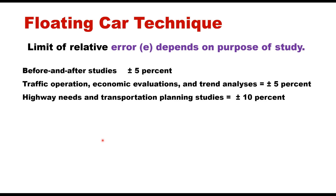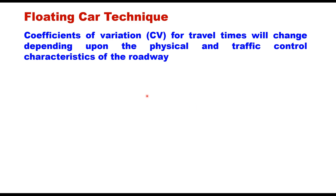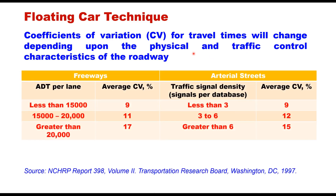The relative error depends upon the purpose of the study. For before and after studies, this value is plus or minus 5 percent. For traffic operation, economic evaluations, and trend analysis, it can also be plus or minus 5 percent. For highway needs and transportation planning studies, it is plus or minus 10 percent. These values are specified in the NCHRP report. The coefficient of variation cv for travel times changes depending upon the physical and traffic control conditions of the roadway. For freeways, depending upon ADT per lane, the average value of cv can be assumed from the table. For urban streets, depending upon traffic signal density, you can assume a value of cv from the table.